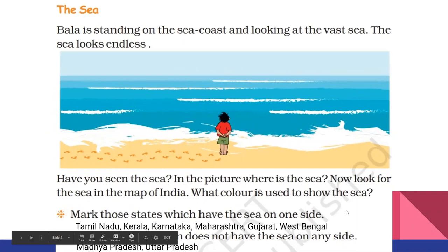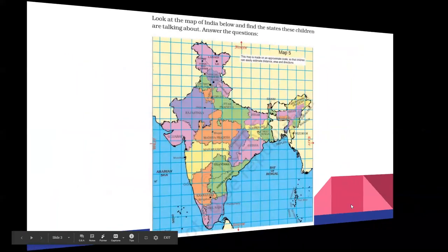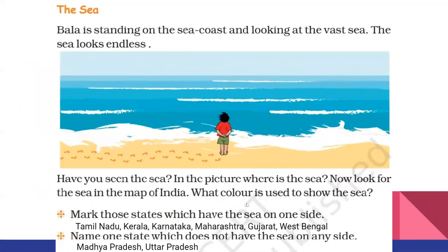The second question is: name one state which does not have sea on any side. If you see the map, the states in the middle part or the northern part don't have any sea on any side.